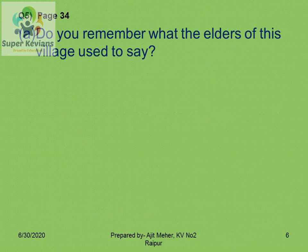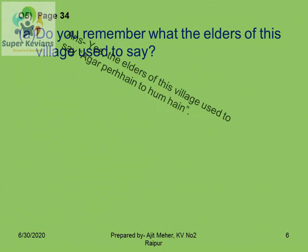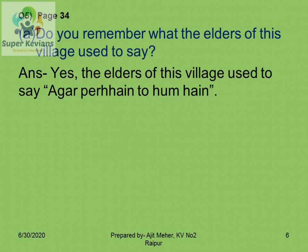The next question is on page 34: do we remember what the elders of this village used to say? The answer is yes. The elders of the village used to say in Hindi, 'Agar per hai to hum hai,' which means if trees are there, then we are also there.